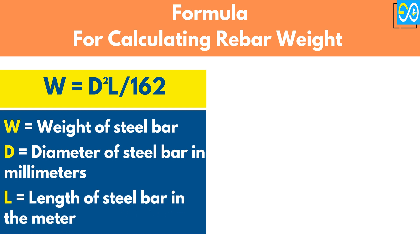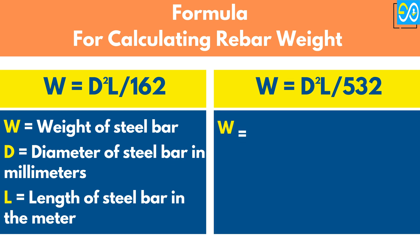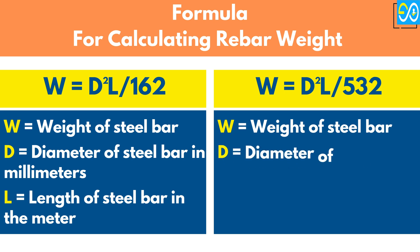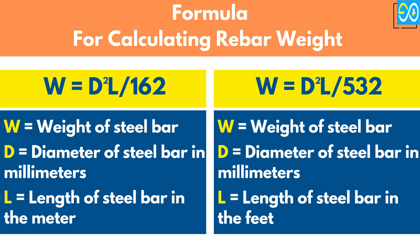Second, if the length of the bar is in feet: w equals d squared times l over 532. Where w equals weight of steel bar, d equals diameter of the bar in millimeters, and l equals length of the bar in feet.